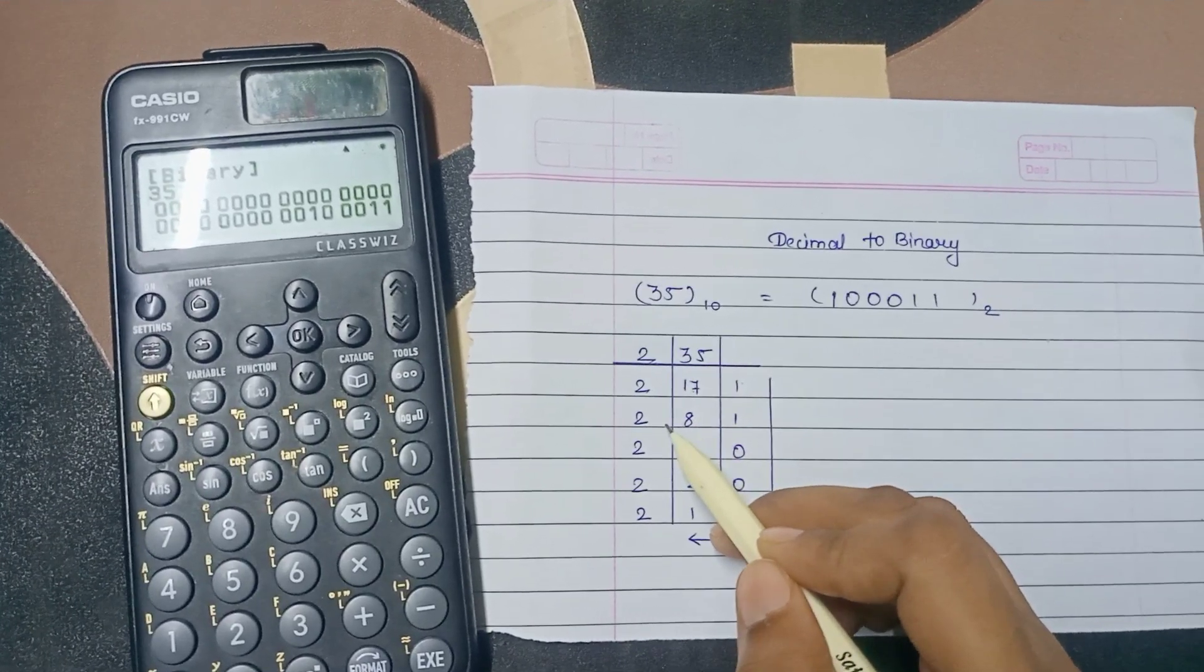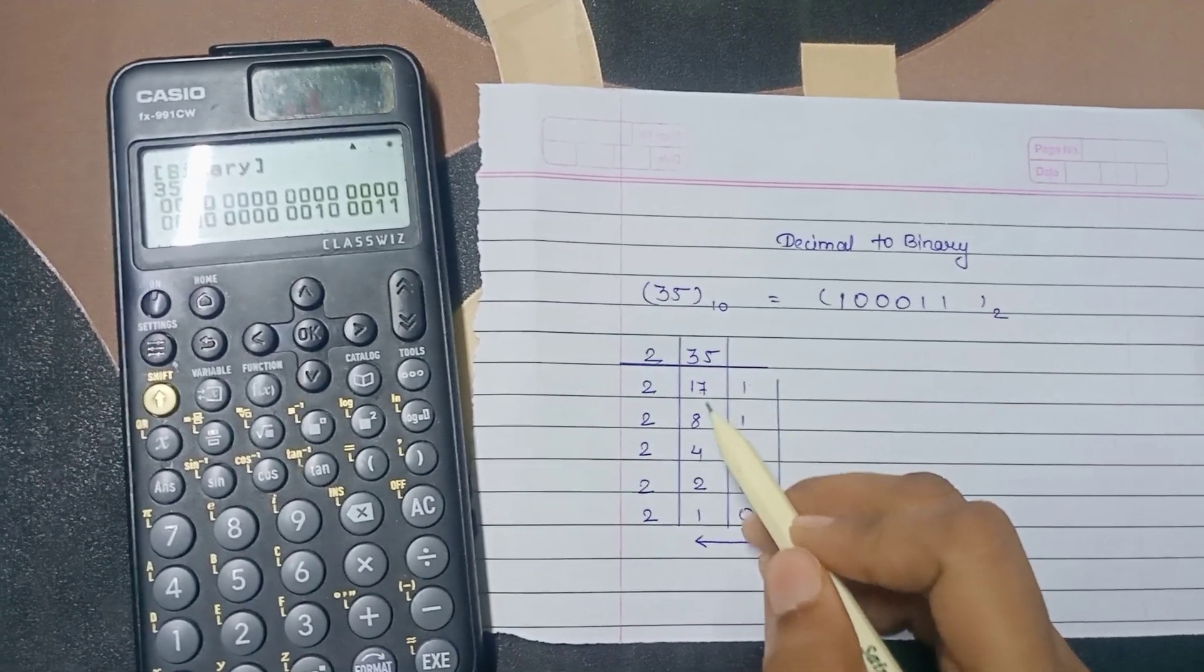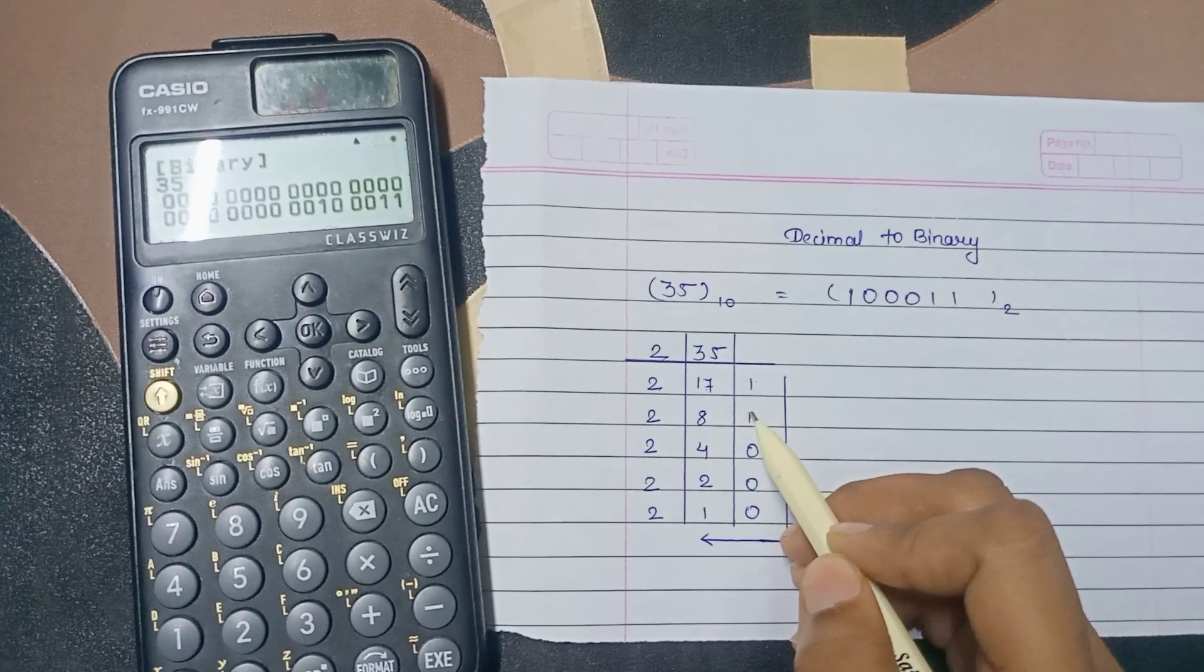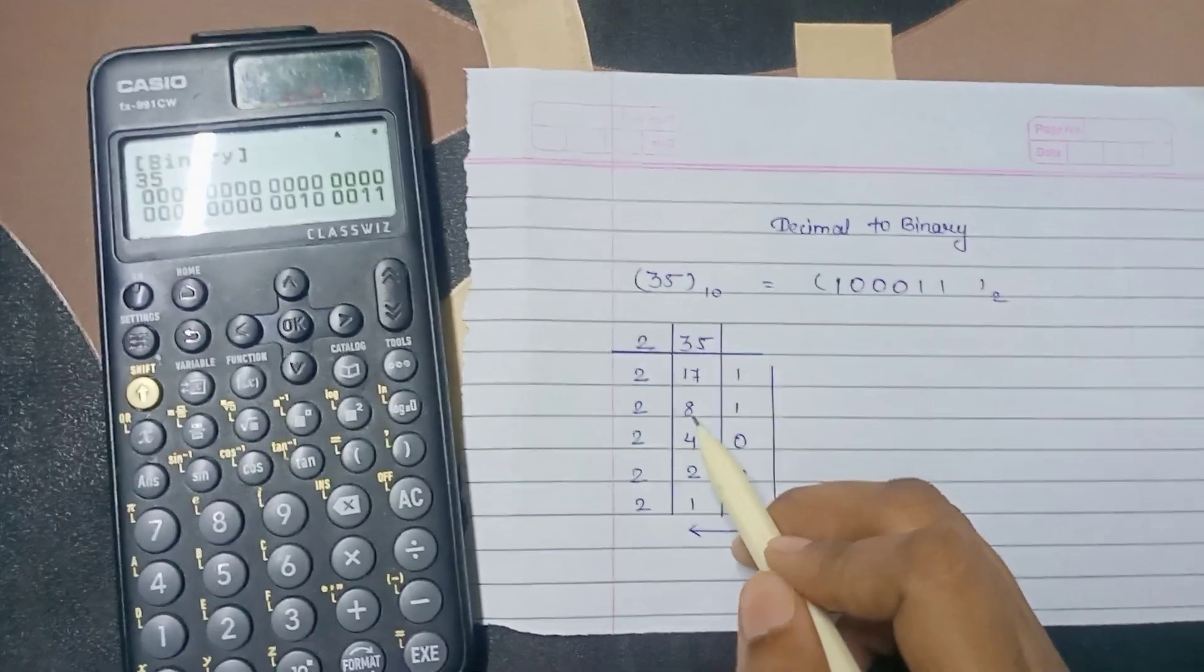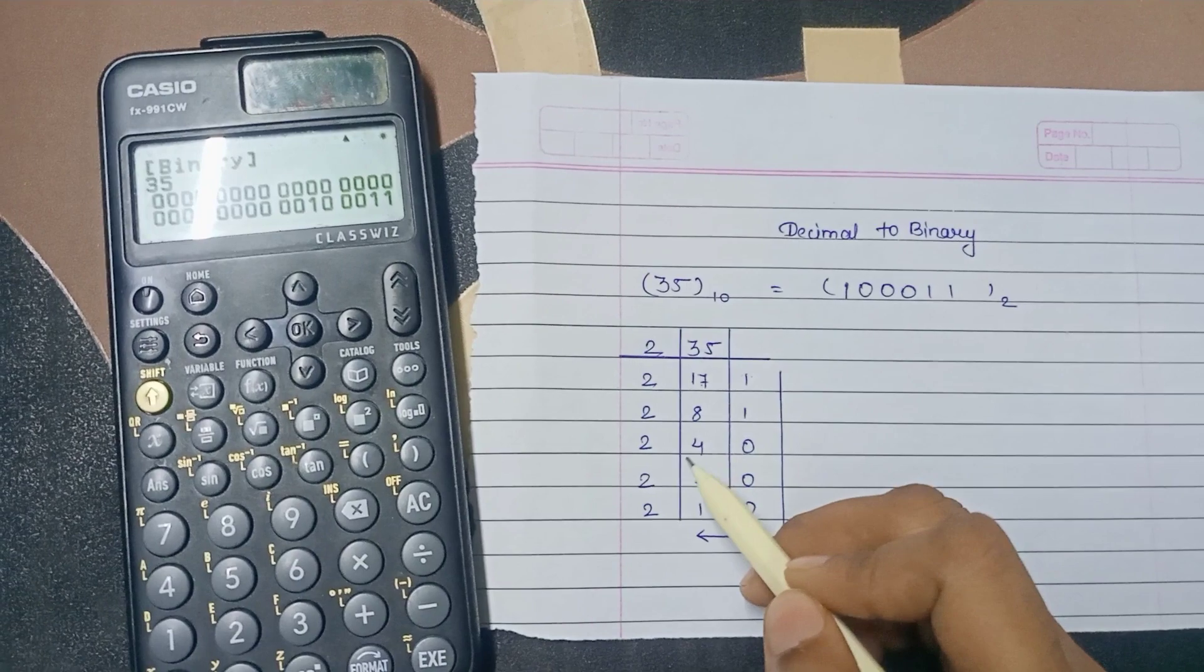Now divide 17 by 2 that is 16 by 2 so 8 remainder is 1. Now 8 divided by 2 is 4 remainder is 0.